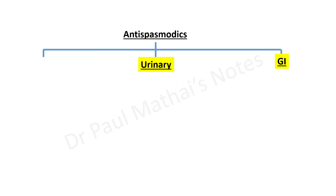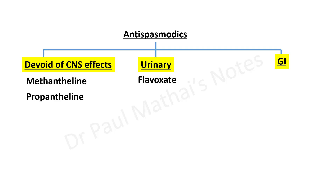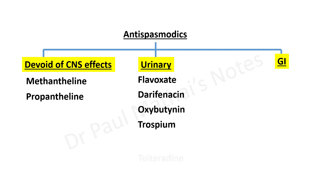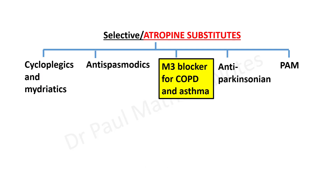Among the antispasmodics, there are those devoid of CNS effects like methantheline and propantheline; urinary antispasmodics like flavoxate, darifenacin, oxybutynin, trospium, tolterodine, and solifenacin; and dicyclomine as a GI antispasmodic.